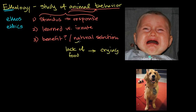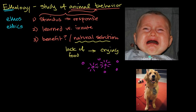You can imagine this has a significant benefit in natural selection. Whatever organism you're talking about, if offspring that are better at making it known that they are hungry — especially when they are dependent on their parents to get them food — are more likely to get the food, then they are more likely to survive and pass their DNA on to future generations. So it makes sense why this is favorable from a natural selection point of view.